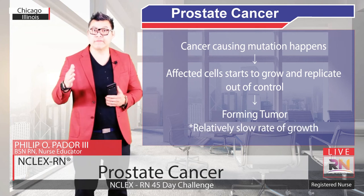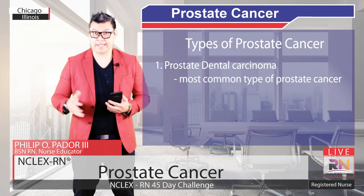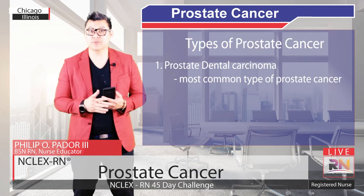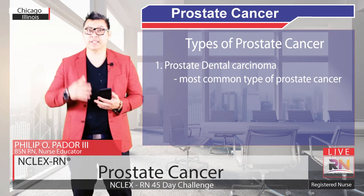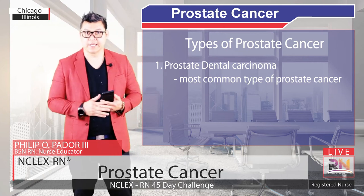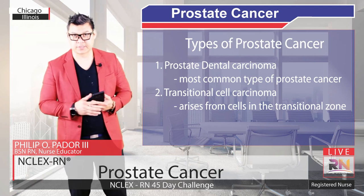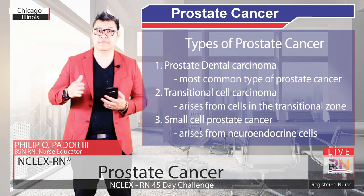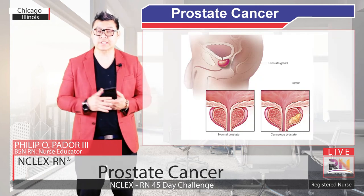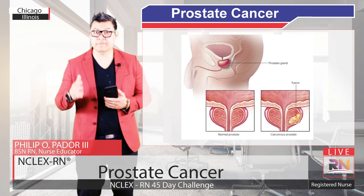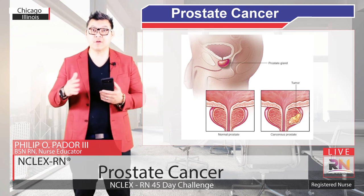Overall, prostate cancer cells have relatively slow growth compared to other types of cancers. Even though prostate adenocarcinoma is the most common type, other rare types exist as well. These typically arise from other cell types in the prostate. For example, transitional cell carcinoma arises from the cells in the transitional zone, and small cell prostate cancer arises from the neuroendocrine cells. Early on, prostate cancer typically causes no symptoms, and that's because the majority of prostate cancers arise in the posterior peripheral zone, which is far away from the urethra.